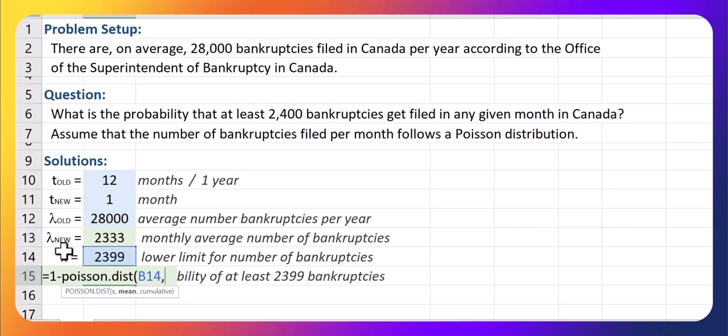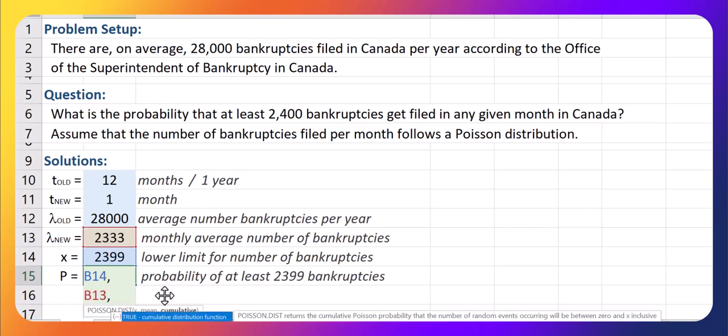So 1 minus POISSON.DIST of 2399, comma, the lambda which is 2333, comma, cumulative equal to true or 1.